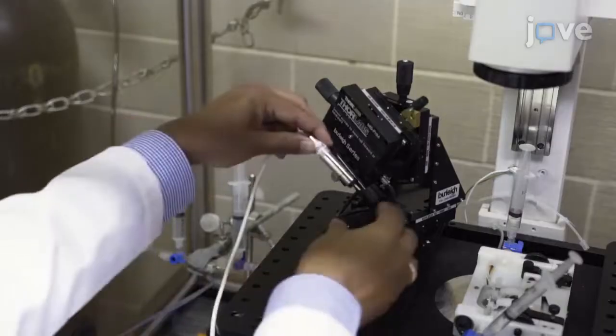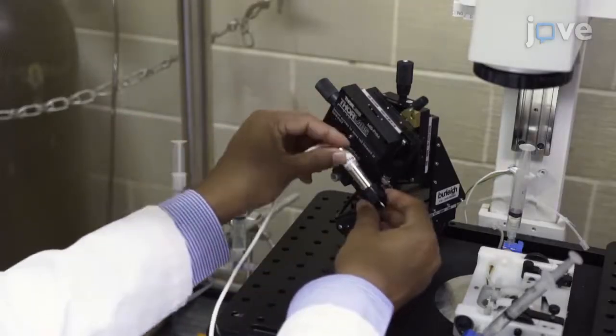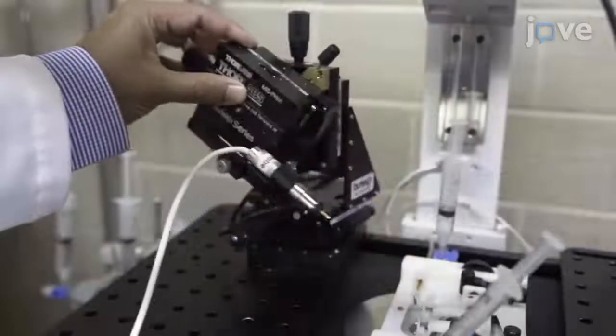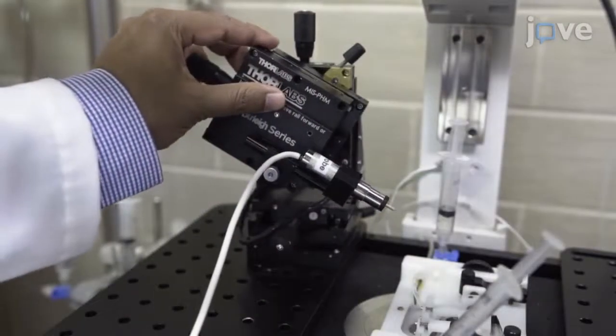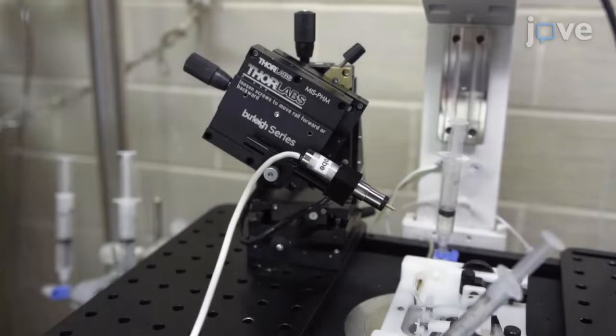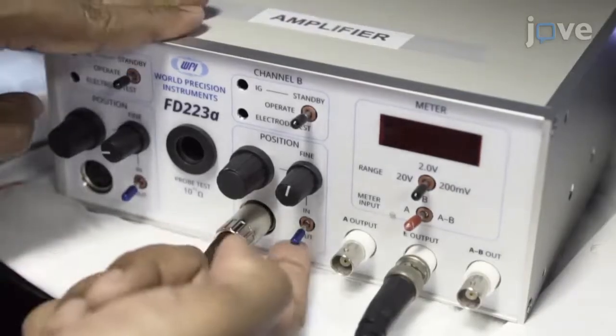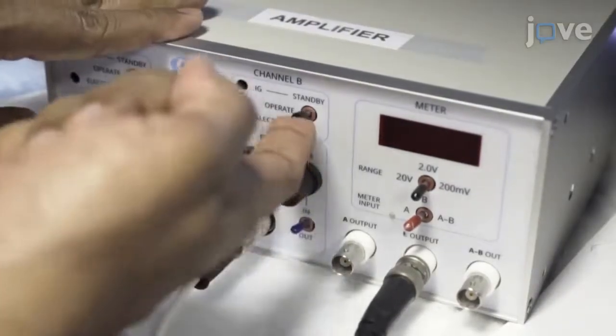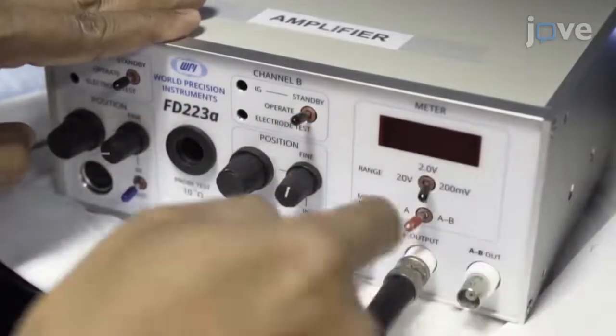Mount the probe in the micromanipulator and turn the micromanipulator towards the microscope and the myograph on a vibration-free table. Place the knobs and switches on the front of the amplifier in the appropriate positions for the experiment as described in the manual.